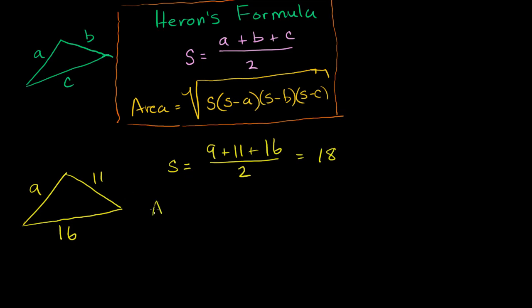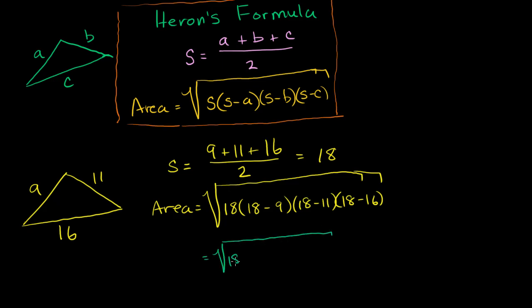And then the area by Heron's formula is going to be equal to the square root of s, 18, times (s minus a), (s minus 9), 18 minus 9, times 18 minus 11, times 18 minus 16. And then this becomes the square root of 18 times 9 times 7 times 2.